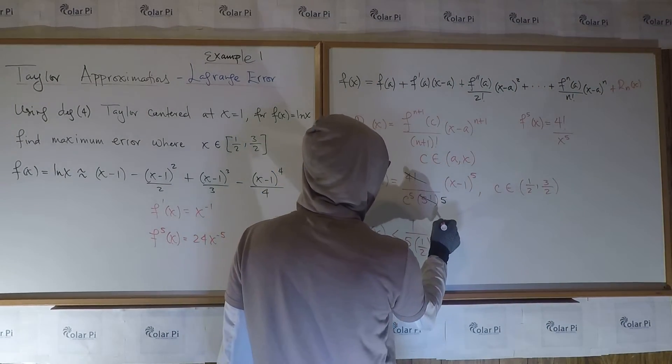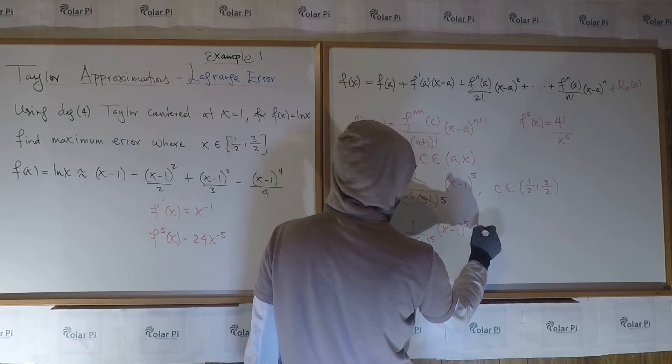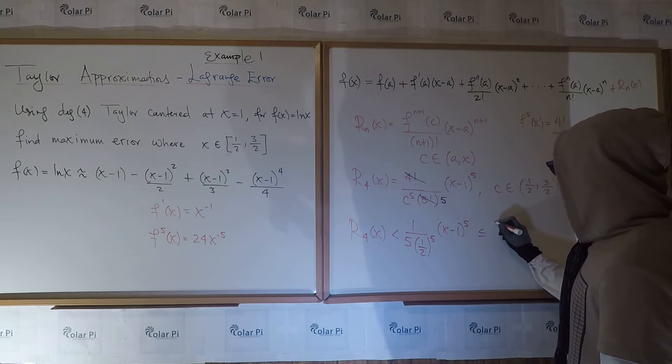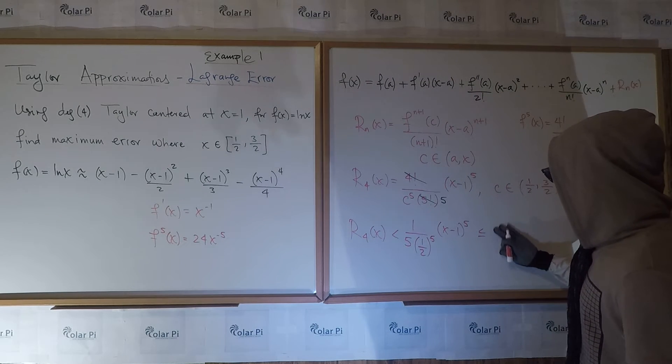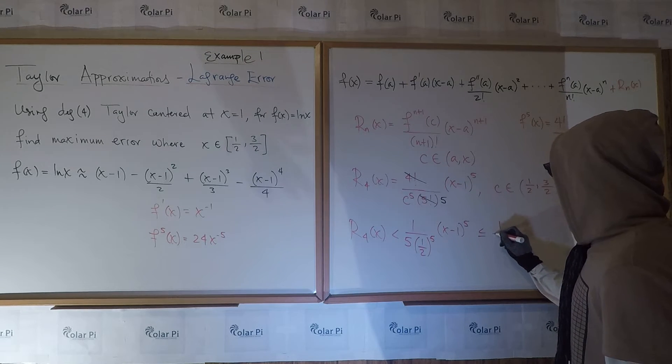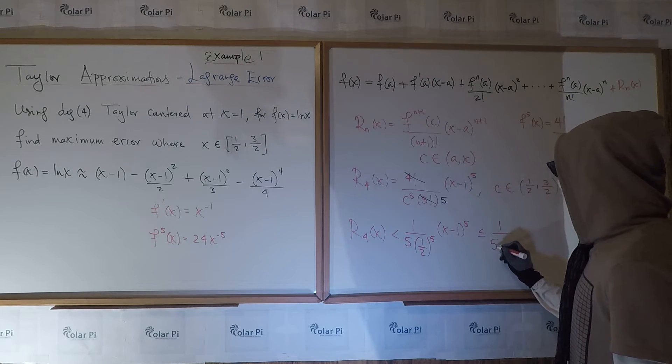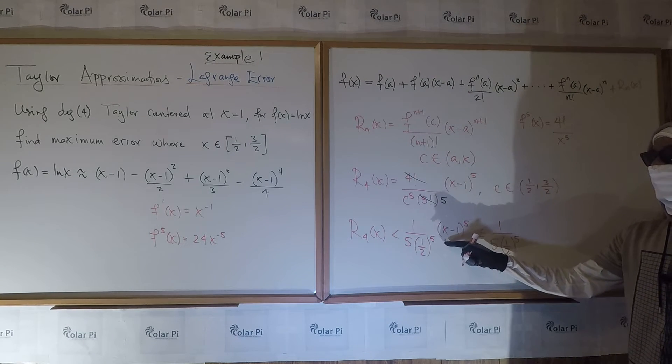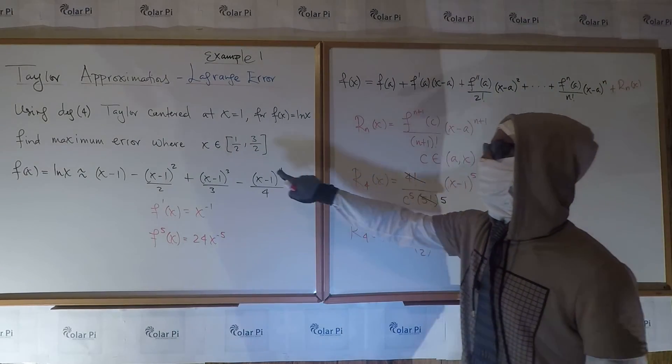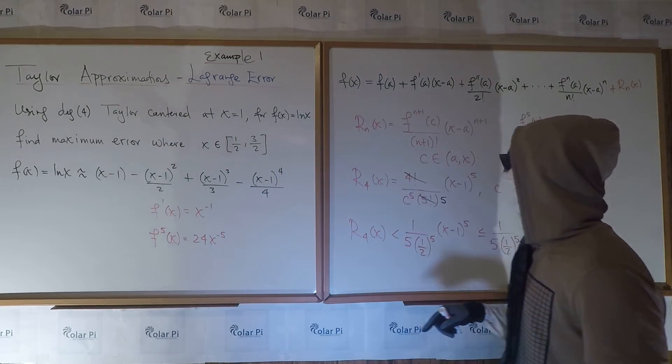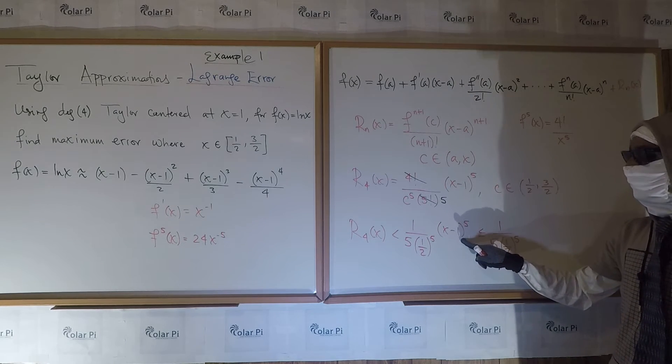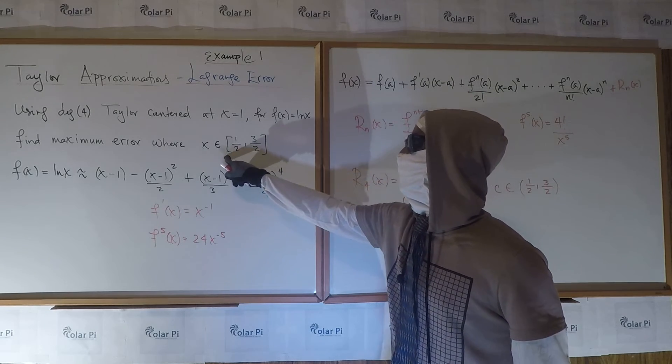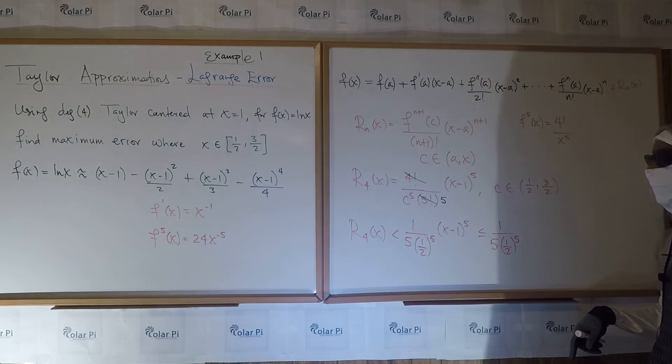And then I have x minus one to the fifth, and I'm going to say that this is less or equal to, and I'll tell you why in a second. Well, I've got one over five and then one-half to the fifth power. Now the only choice there is to make is for x, and x is in here including the endpoints one-half and three-halves. And x minus one to the fifth will be biggest if I pick the number on the farthest right in here, and that's three-half.